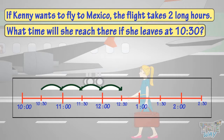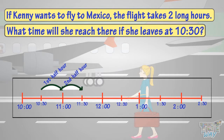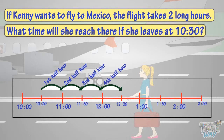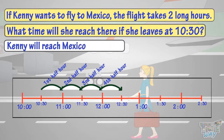10:30 to 11:00 — first half hour is past. 11:00 to 11:30 — second half hour is past. So, one hour is past. 11:30 to 12:00 — third half hour is past. 12:00 to 12:30 — fourth half hour is past, or two whole hours are past, and it is 12:30 now. So, Kenny will reach Mexico at 12:30.